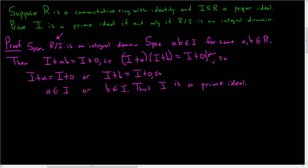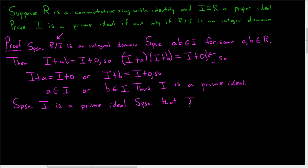So one direction down and one to go. Now let's start by supposing I is actually a prime ideal. We'll assume that we have some product equal to zero in the quotient ring. So suppose that I plus a times I plus b equals I plus zero.